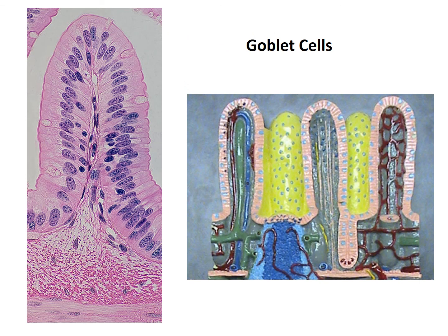Lastly, I want to identify the goblet cells. On the left here we have a villus of the mucosa as seen under the microscope. Notice that some of the cells have little clear vesicles — these are the goblet cells. Goblet cells produce mucus, which is important for protecting the lining of the mucosa and also providing lubrication for the movement of substances through the lumen. Over here on the intestinal villus model, you see the villi, and then you see the goblet cells. The vesicles are shown in blue — so those are the goblet cells.